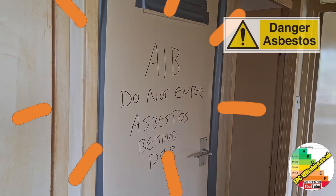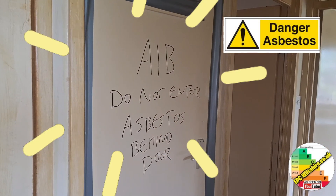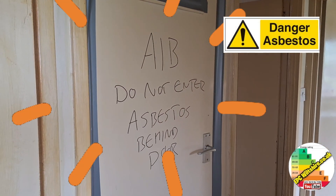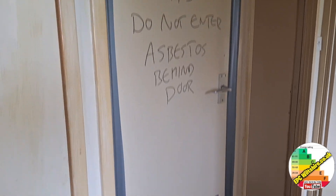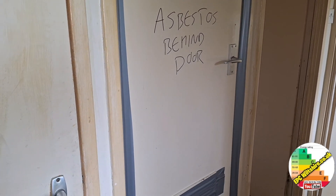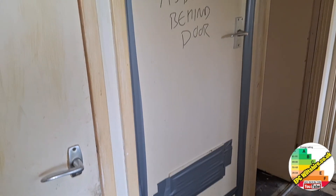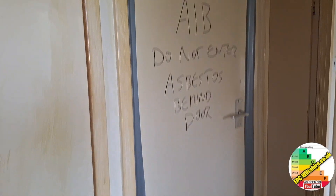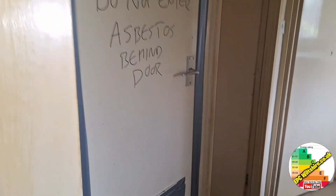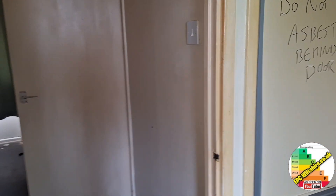The boiler — whereabouts is that? Probably in this cupboard here. But there's an AIB warning: 'Do not enter — asbestos behind door.' That looks like I need to abort the survey, unless the boiler is in one of these other cupboards. So I'm not opening that door.